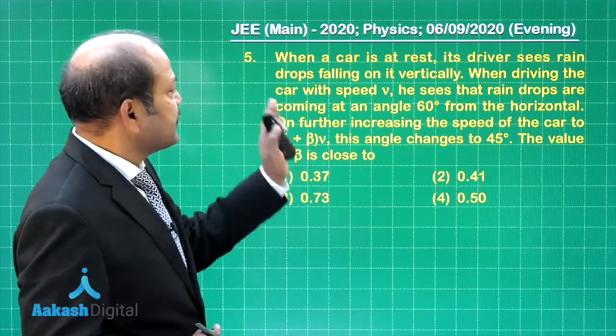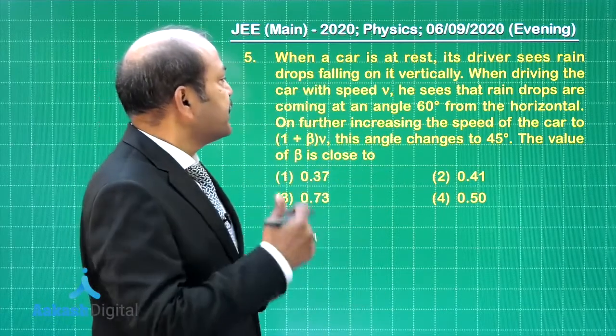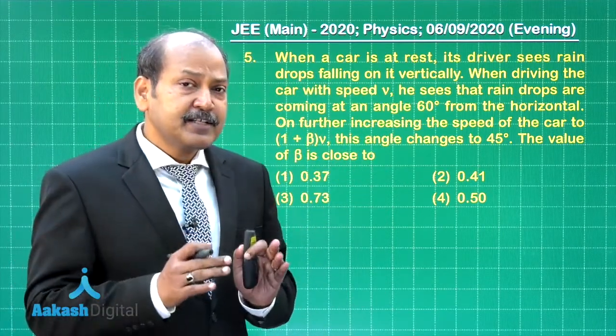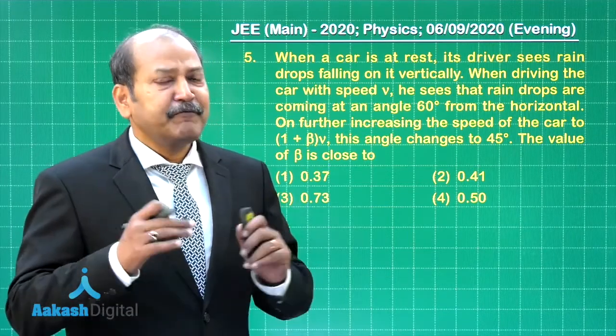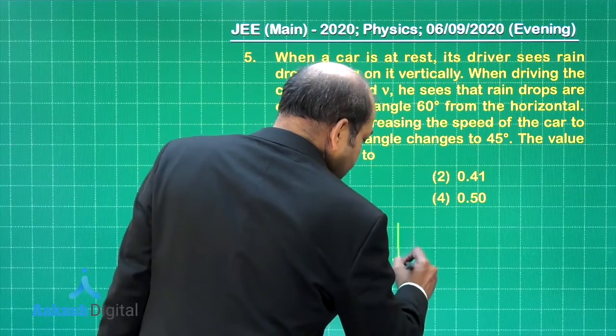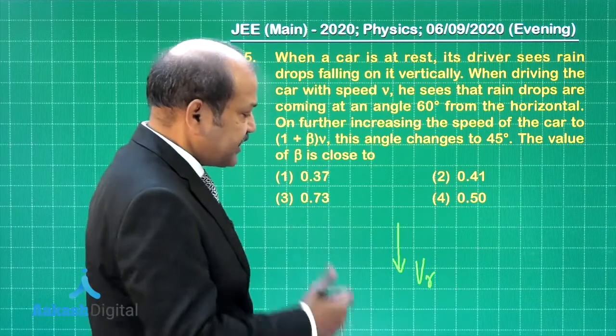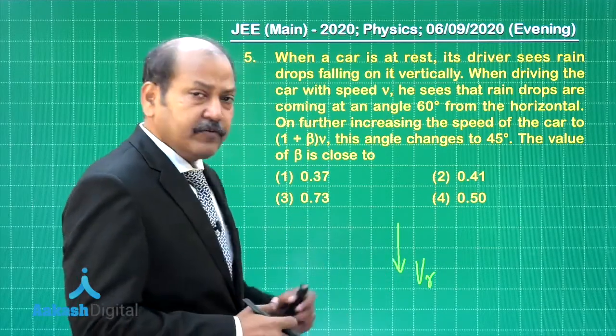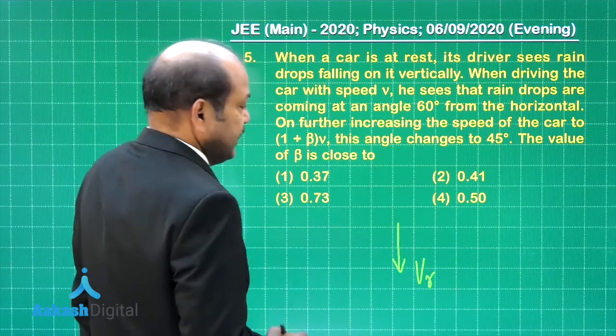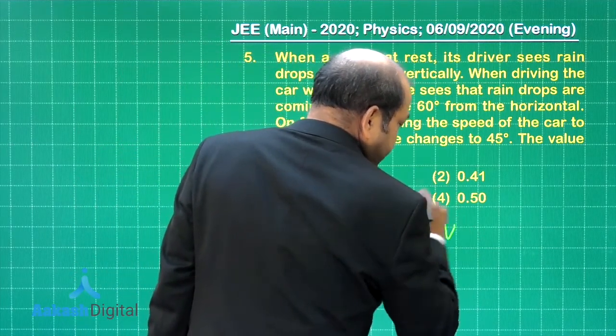And if we look at the situation, when the car is at rest, the rain appears to fall vertically to the driver. That means the rain is falling vertically with respect to the ground. So let us draw the vector which shows the velocity of rain with respect to ground. Let us call it vr. The direction is known. This is velocity of rain with respect to the ground. And when the car is moving with speed v, let us say that this is the velocity of the car, the magnitude is v.